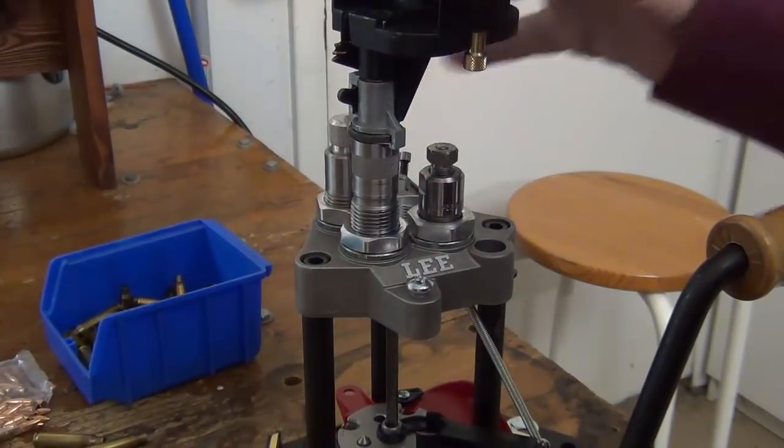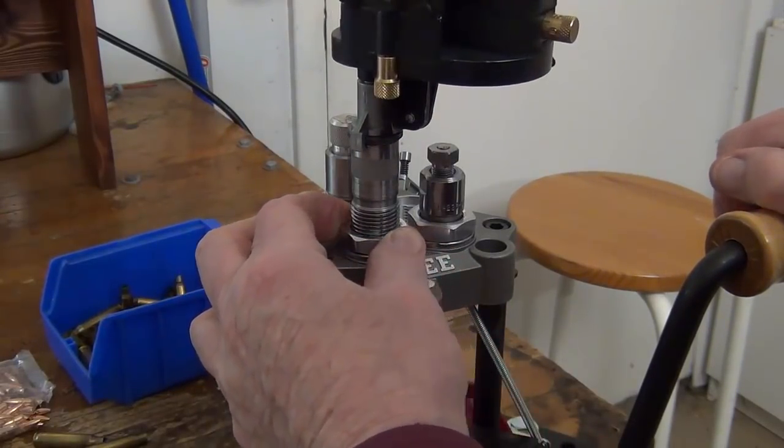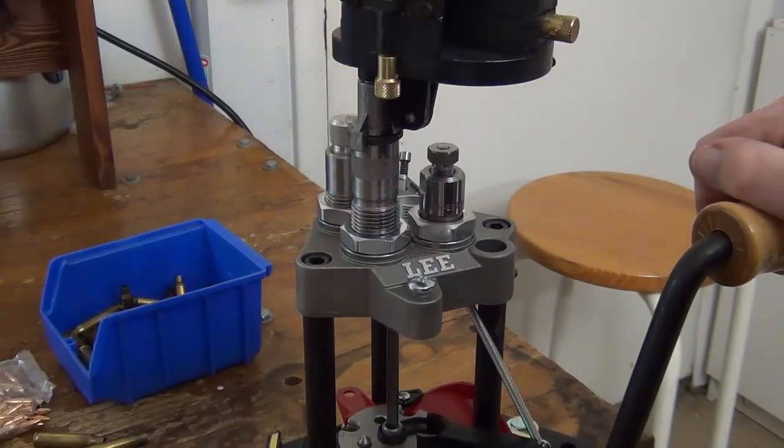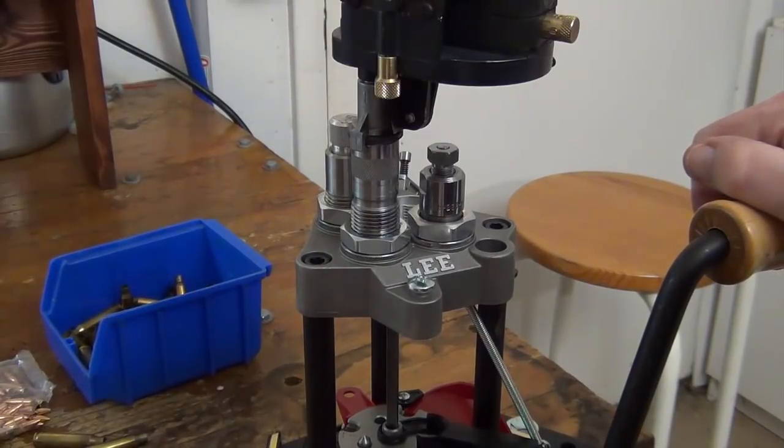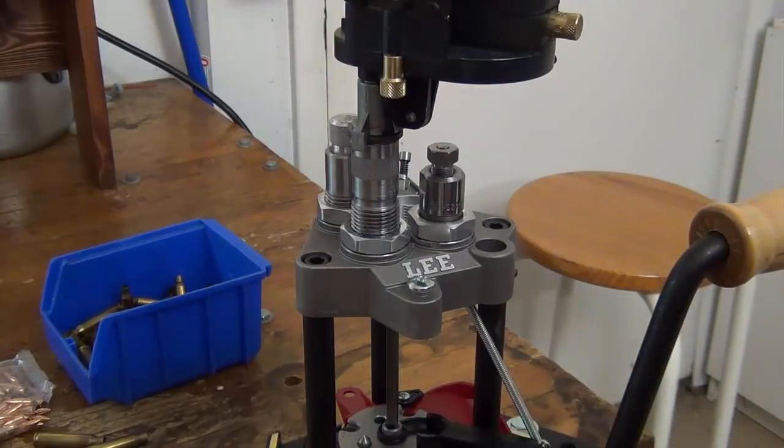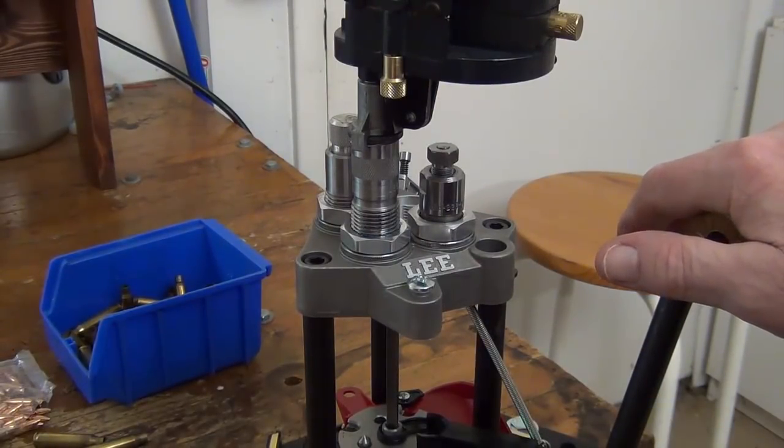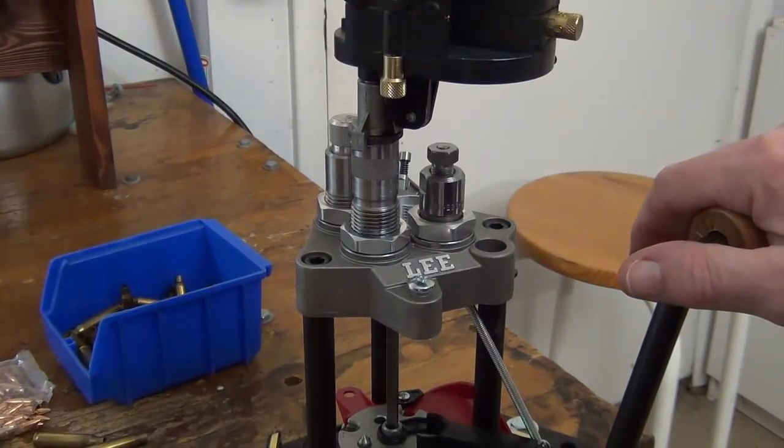The third die to go in is the charging die. And you want to adjust that to a depth so that your powder dispenser operates properly and if you're doing pistol cartridges so that your case belling is about right.